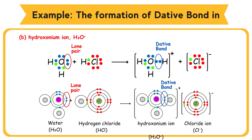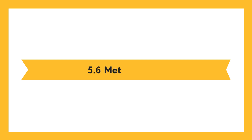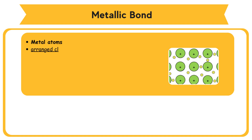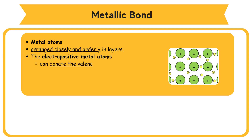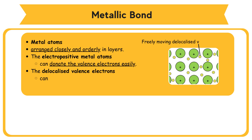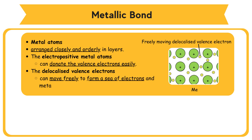Dative bond is formed when the oxygen atom in the water molecule shares one lone pair of electrons with a hydrogen nucleus, forming Hydroxonium Ion (H3O+). 5.6 Metallic Bond. Metal atoms are arranged closely and orderly in layers. The electropositive metal atoms can donate the valence electrons easily. The delocalized valence electrons can move freely to form a sea of electrons and metal cations. The orderly arranged metal atoms only vibrate and rotate at fixed positions.